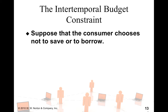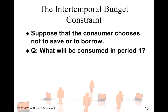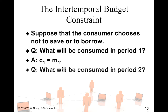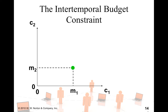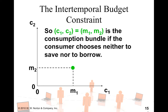Suppose the consumer chooses not to save or to borrow. Then consumption in period 1 is simply M1, everything available in the first period. Similarly, consumption in period 2 would be C2 equal to M2. This gives us what we call the endowment point, shown as the green dot, where C1, C2 equals M1, M2 — the consumption bundle when the consumer neither saves nor borrows.